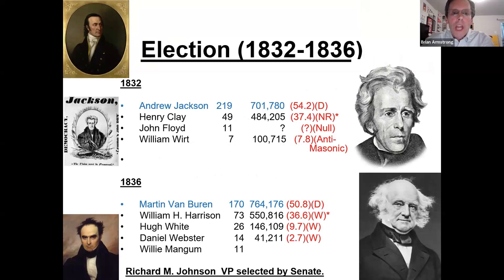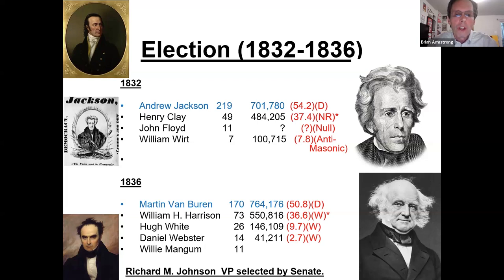Jackson's next election was another big victory, defeating Clay. Then his vice president, Martin Van Buren, ran in the next election — almost like George Bush coming after Reagan. Richard Johnson was Van Buren's VP and is the only VP ever selected by the Senate, because he had a mulatto wife who ran his plantation. Southern voters refused to vote for him, so the vice presidential election had to go to the Senate.